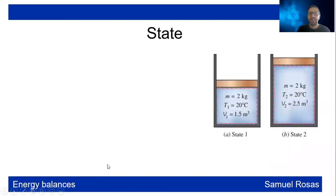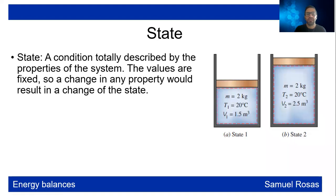A state is a condition totally described by the properties of the system. The values are fixed. So a change in any property will result in a change in the state. If you change, let's say, the volume, then the state is different.